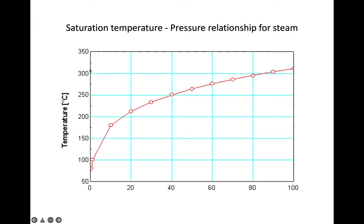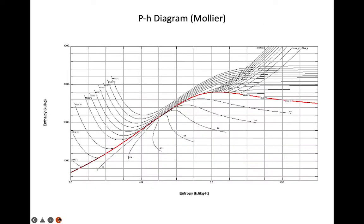We can also express the parameters of water and steam in a PH diagram — P for pressure, H for enthalpy. Another popular name for this diagram is the Mollier diagram, named after the scientist who constructed it.